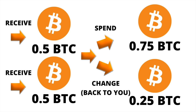In example number two, somebody has received two separate transactions totaling one Bitcoin, so they have two UTXOs sitting in their wallet. They spend out to somebody and receive some change. This transaction would be more expensive than the first because the wallet was preloaded with two UTXOs, which uses more data on the Bitcoin blockchain.